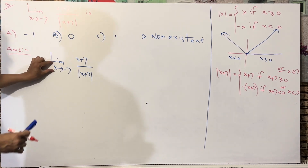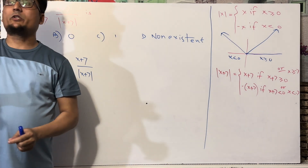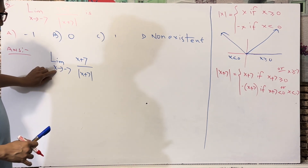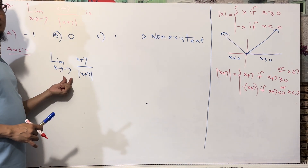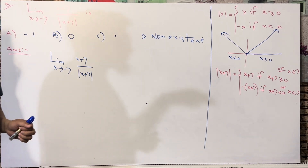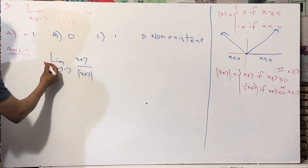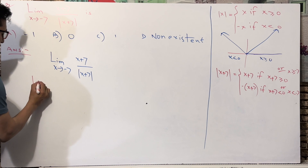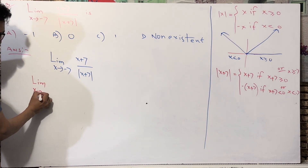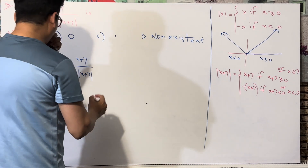Here x tends to minus 7. Remember: a limit never takes the exact value — we take a value very close to minus 7. This means x tending to minus 7 gives us values very very close to minus 7, not exactly minus 7. So we have two cases from minus 7, as we will see on this graph.